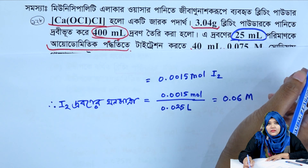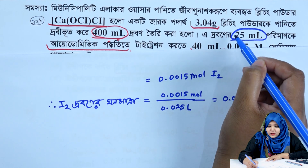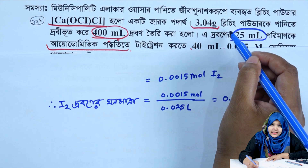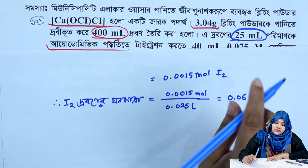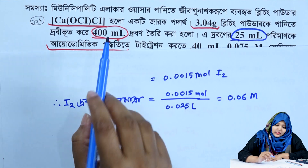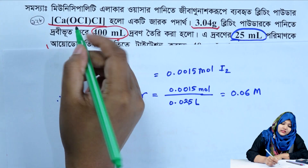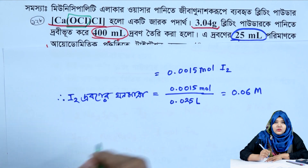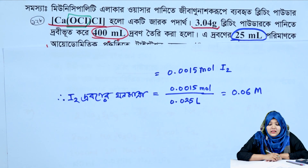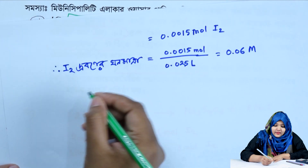Bleaching powder is stored. Bleaching powder has been added, which contains the hypochlorite ion.